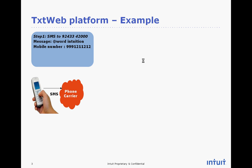Step one is the user sending an SMS to the TextWeb platform by saying "@word intusion." In this case, there are a couple of things to note. 92433422000 is the number for the TextWeb platform.